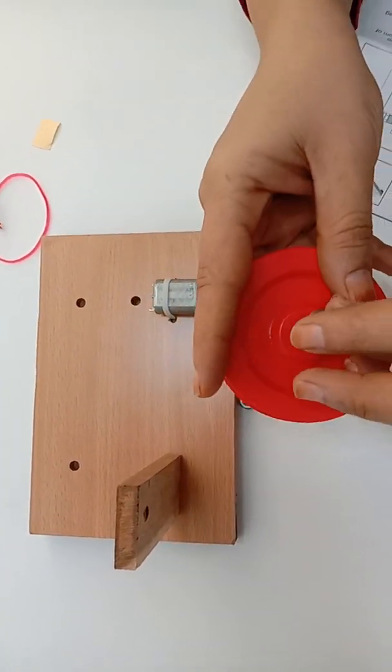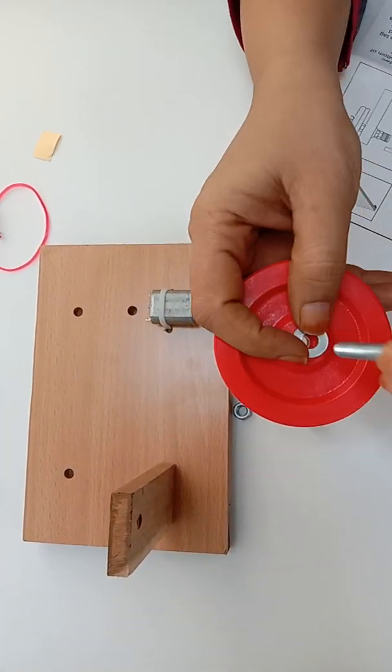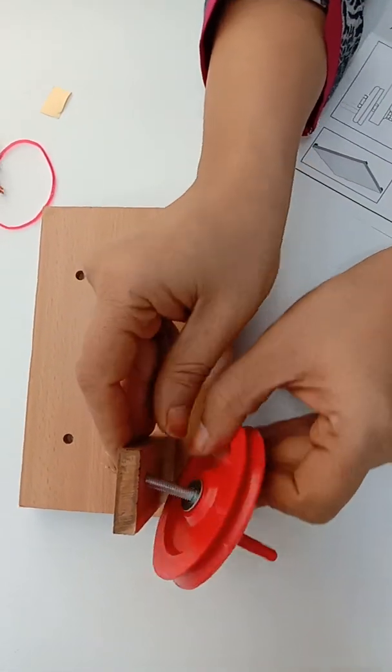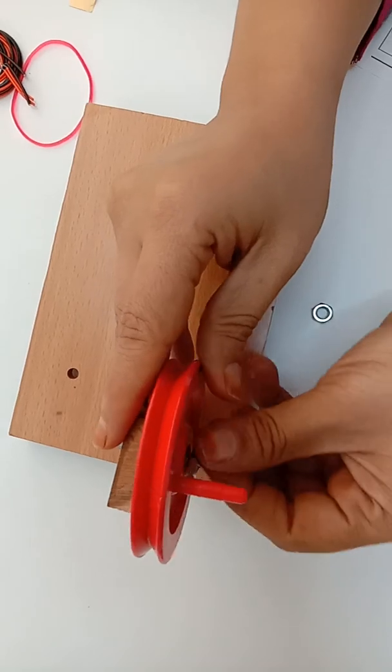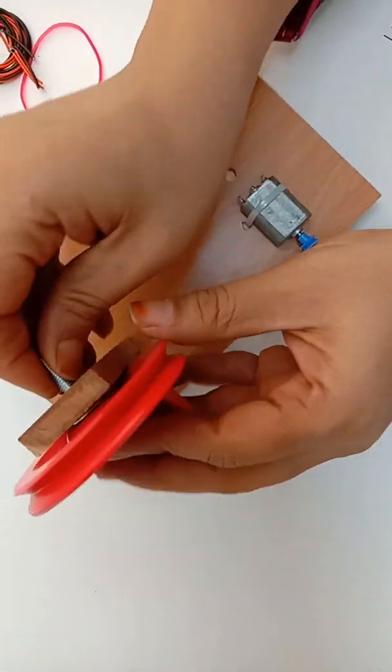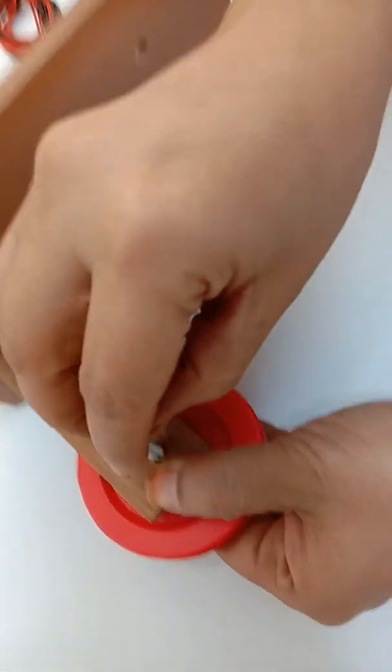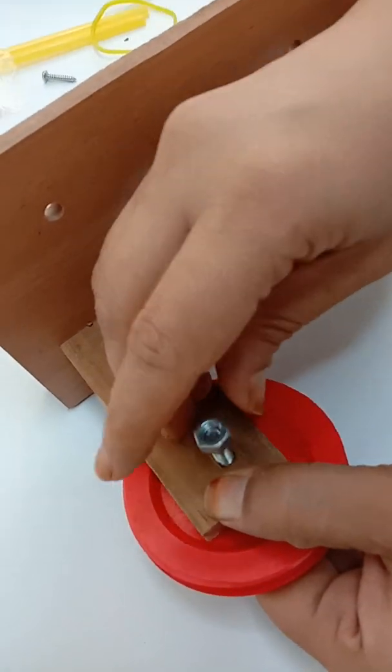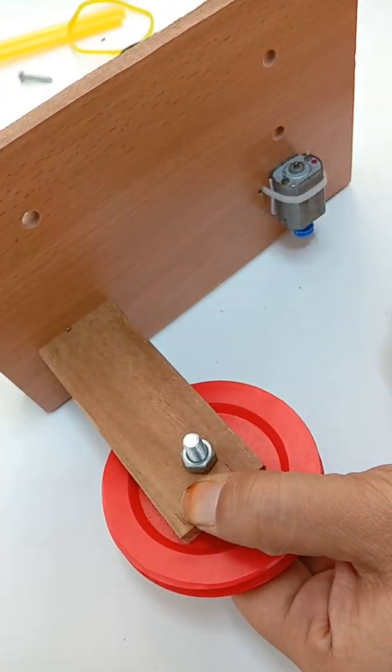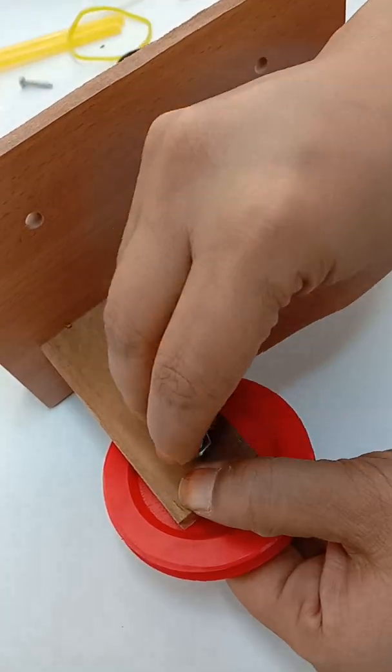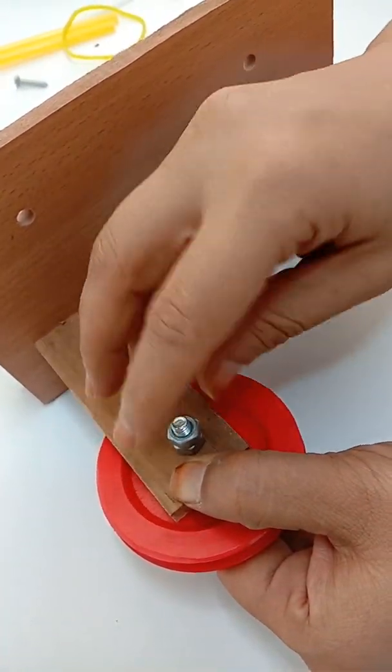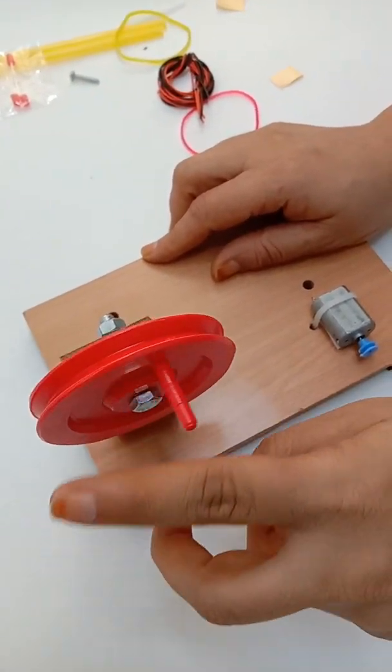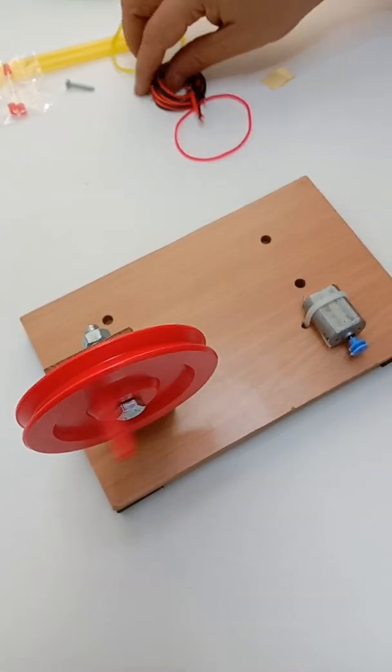You can keep this washer at the end of this pulley and place it like this. Now we are going to put these two bolts. This pulley should be freely moving.